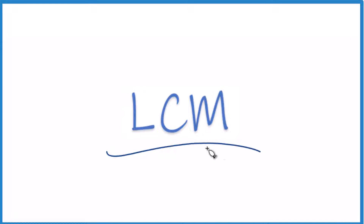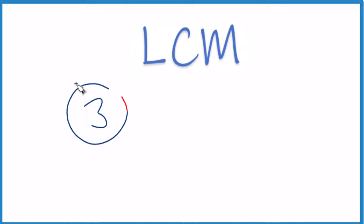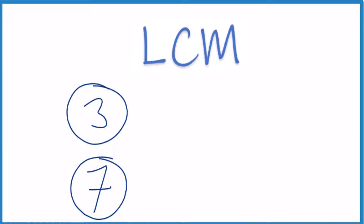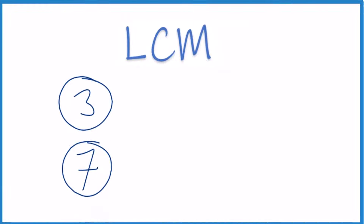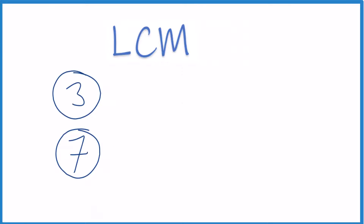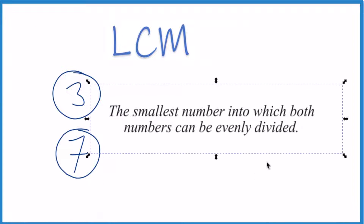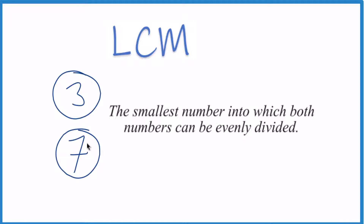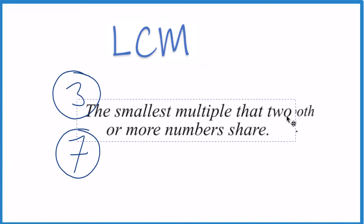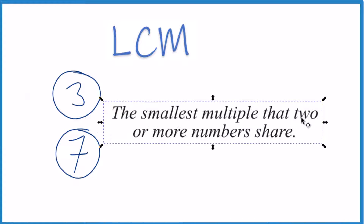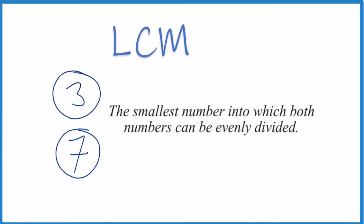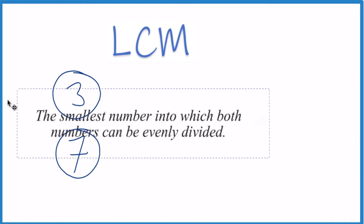Let's find the least common multiple for 3 and 7. So we're looking for the least common multiple, the LCM. You can think of the LCM as the smallest number which we can divide both of these numbers into, or the smallest multiple that these two numbers share. That's the LCM, and we're going to find it.